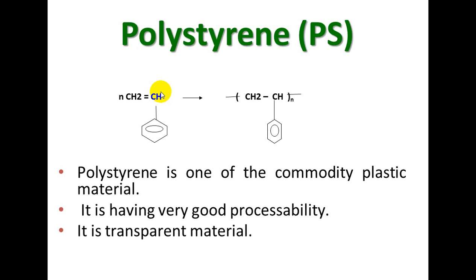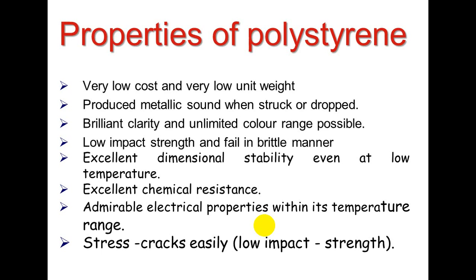Polystyrene is one of the commodity plastic materials. It has very good processability, is very easy to handle and process, and is a transparent material. Properties include very low cost, very low unit weight, produces a metallic sound when struck or dropped, brilliant clarity with excellent color range, but low impact strength and fails in a brittle manner.